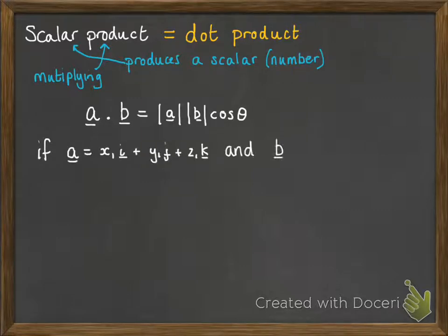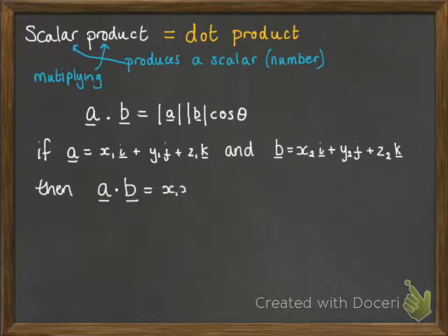We can also do this in Cartesian form, where you multiply the coefficients of i together, you multiply the coefficients of j together, you multiply the coefficients of k together, and you add them up. Now that looks a bit weird like that, but it's much easier to see with an example. So here you go.